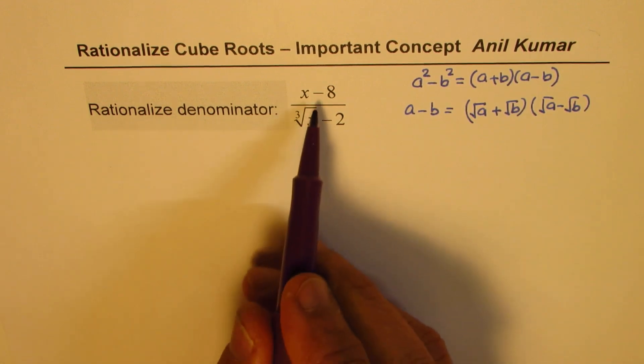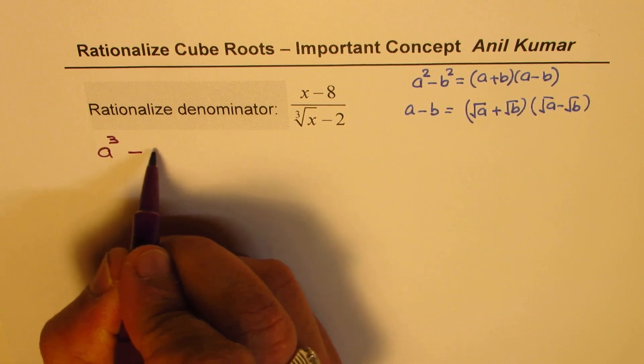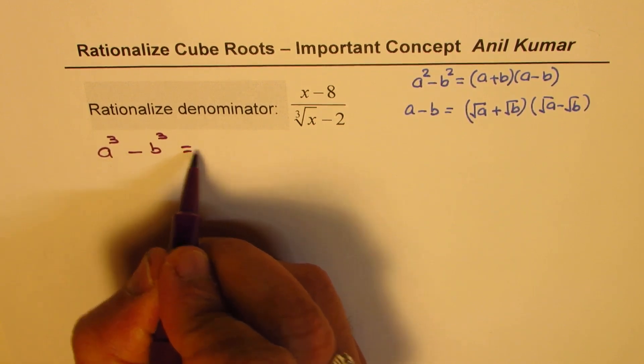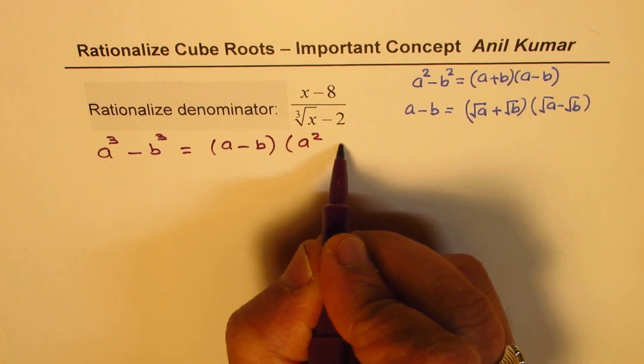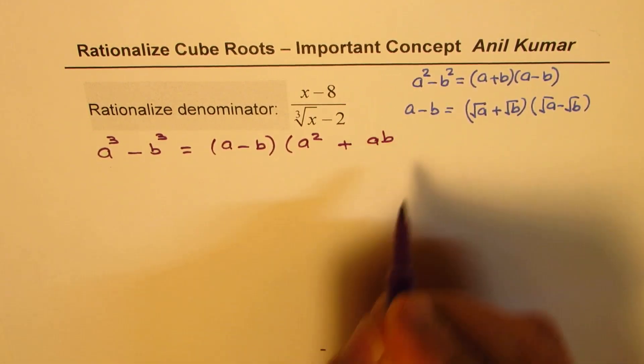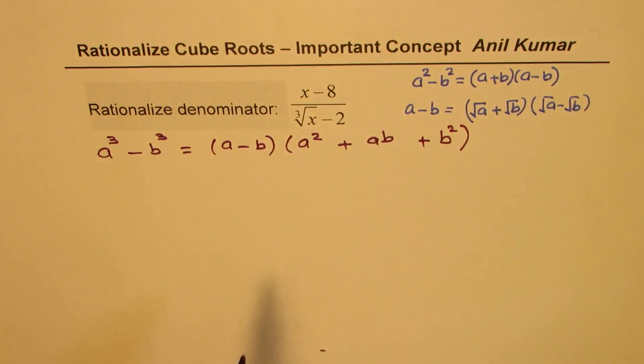So, a cube minus b cube is basically equal to a minus b times a square plus ab plus b square. So, that is the formula.